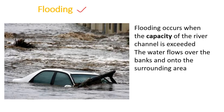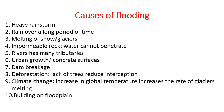Next is river flooding. Flooding occurs when the capacity of the river channel is exceeded — the water can no longer flow within its channel. The water then flows over the bank and onto the surrounding areas, and that is what causes flooding.